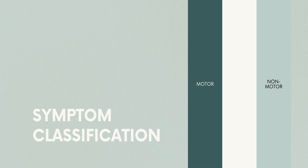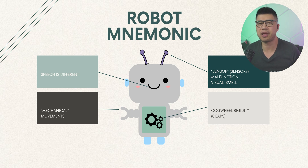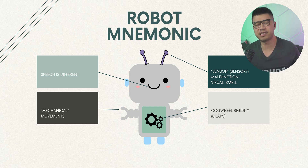Motor symptoms to know and be familiar with, and their terminologies, include bradykinesia, tremors, cogwheel rigidity, postural instability, impaired balance and coordination, freezing, and dystonia. To remember these symptoms, I visualize a robot — they often move mechanically, which describes the slowness, tremors, impaired coordination, balance and posture, and freezing. I also imagine the cogwheels, as in cogwheel rigidity, as the working parts inside a robot where gears allow them to move.